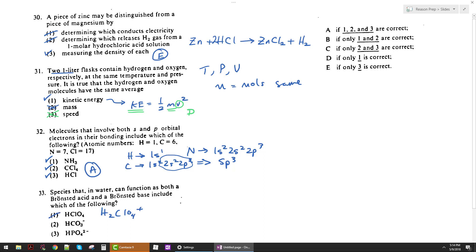But both 2 and 3 can either lose that H or gain one. And if HCO3 minus gains one, it becomes H2CO3. If HPO4 gains one, it becomes H2PO4 minus. And that's all legit. Either one of those is fine. So it can lose that H or it can gain that H. So both 2 and 3 work. And so we can pick as our answer here choice A.